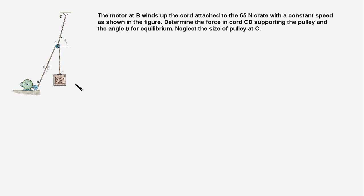In this problem, we have a crate of 65N weight being pulled up by a cord ACB. The motor at B winds the other end of the cord, and the crate is moving up at a constant velocity. The pulley at C is in equilibrium and is supported by the cord CD. We need to find the tension in cord CD and the angle theta.